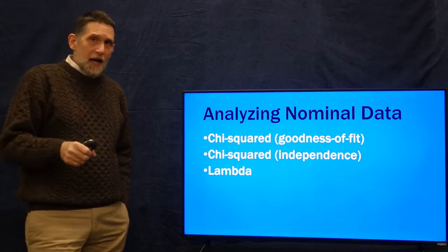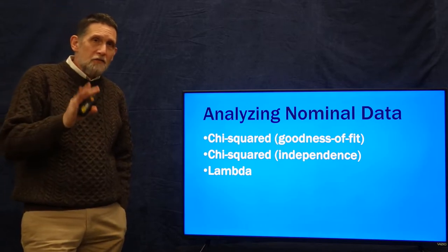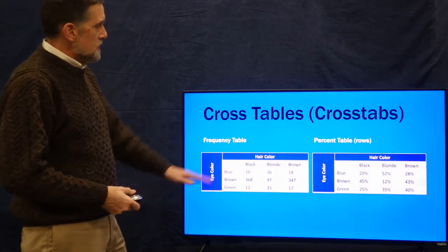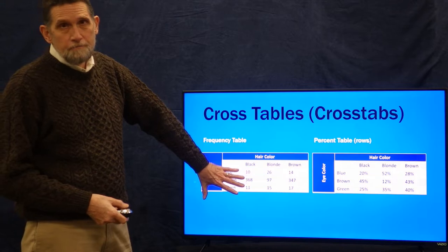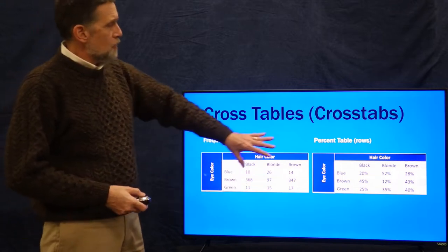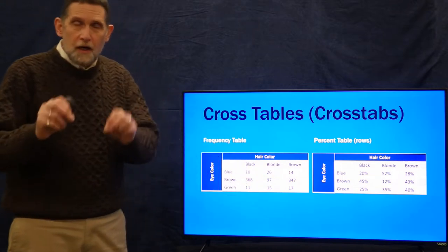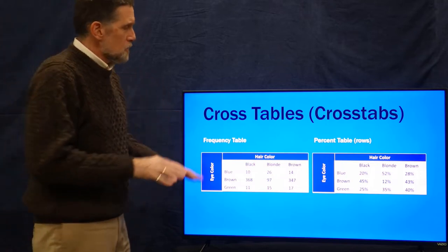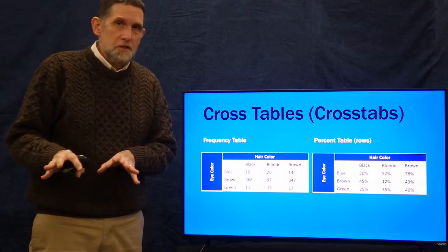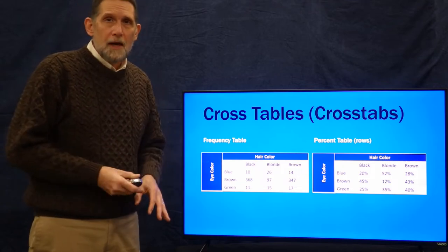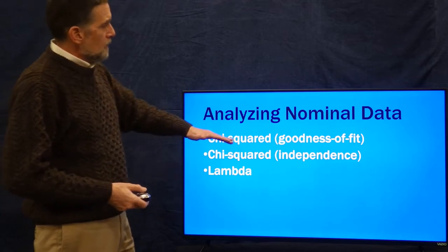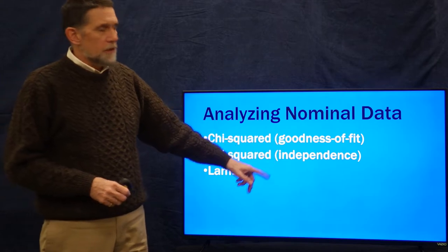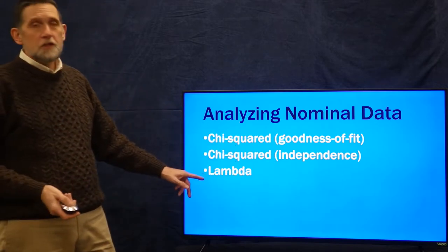When we analyze nominal data, we basically have three tools in our toolkit, and all of these deal with cross-tabulations. If we don't have cross-tabulations, there are a couple of things we can do, but really we're stuck with cross-tabulations in terms of what we can do with nominal variables. With cross-tabulations, we can do chi-squared — either for goodness of fit or independence — and we can do lambda.